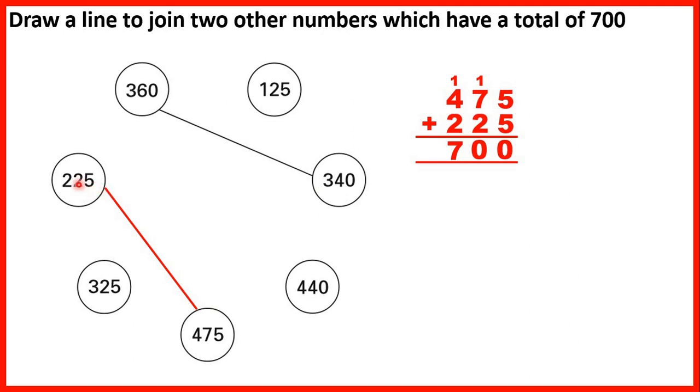The way to spot this quickly is to know our number bonds to 100. So because we know that 25 plus 75 is 100, we know that our answer will end in two zeros, so be a multiple of 100. And then we can just check that it works using column addition like we've done here.